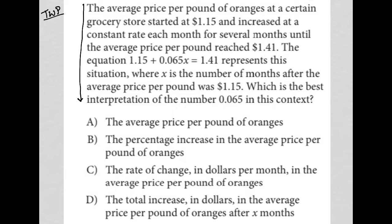So this question says the average price per pound of oranges at a certain grocery store started at $1.15 and increased at a constant rate each month for several months until the average price per pound reached $1.41. So I'm going to just write that down. So $1.15 and then we added some unknown amount per month. But it was a constant amount. So that's why I put X. X is a single number.